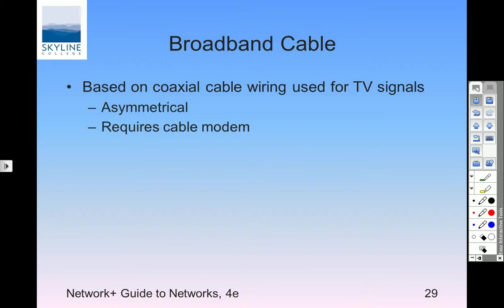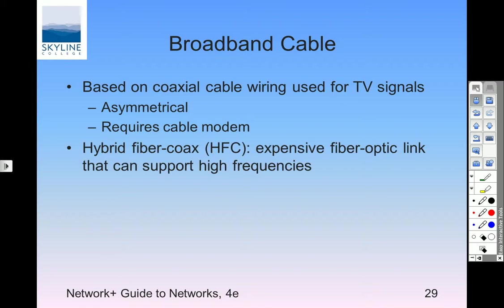Broadband cable is probably what most of us have. Asymmetric means we have a different download and upload rate — if you upload anything you'll see that dramatically. Download maybe 20 megabits per second, upload maybe 600 or 700 kilobits. Symmetric means the same down and up, and that's what you want in a business — a symmetric connection — so if you run a web server you can send information out in a timely manner.